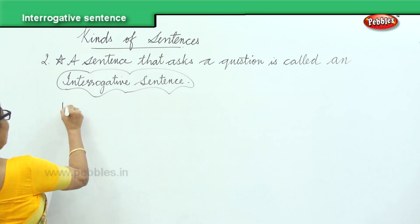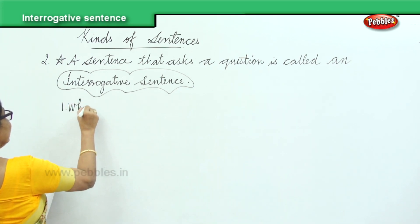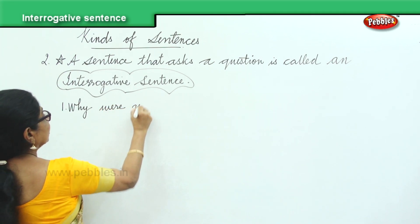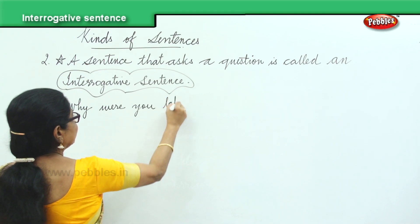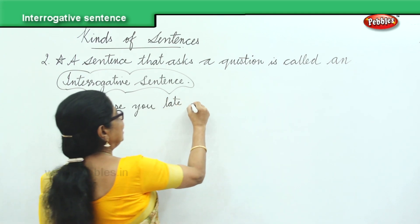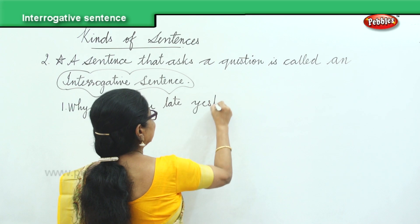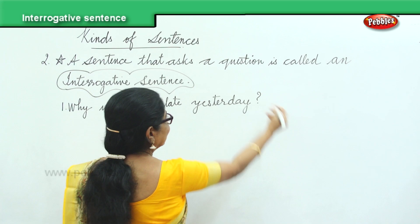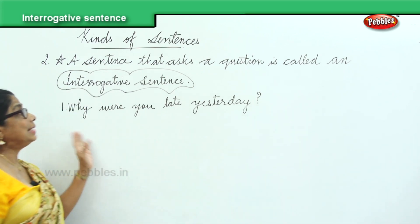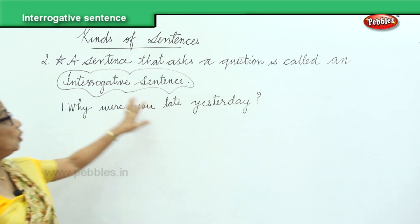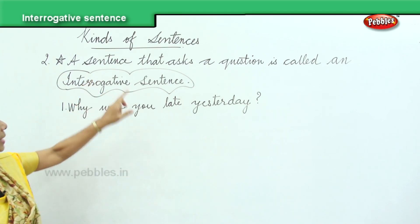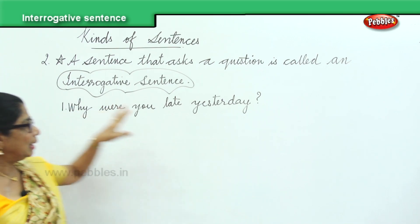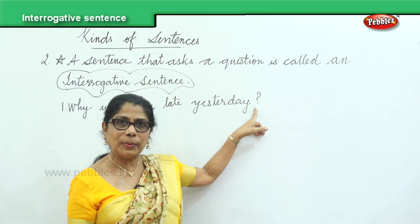First one: Why were you late yesterday? A sentence that asks a question is called an interrogative sentence. It begins with a capital letter and ends with a question mark.